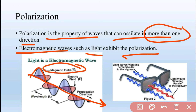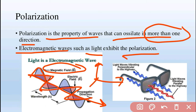In an electromagnetic wave, the electric field and magnetic field are shown in perpendicular directions. The electric field is in the vertical direction and the magnetic field is in the horizontal direction. These are both perpendicular to the direction of propagation.